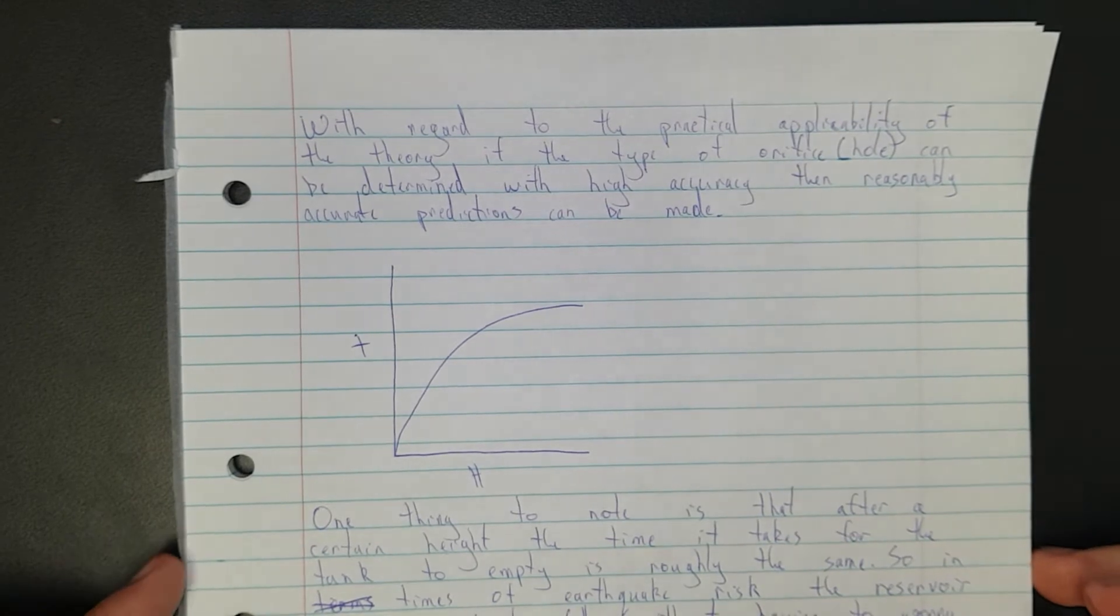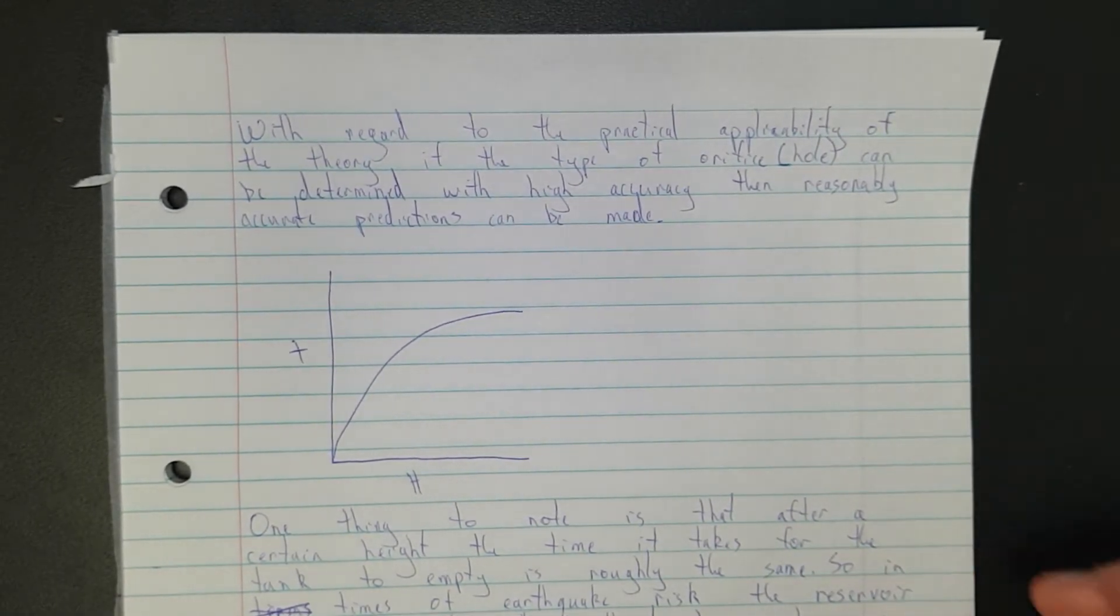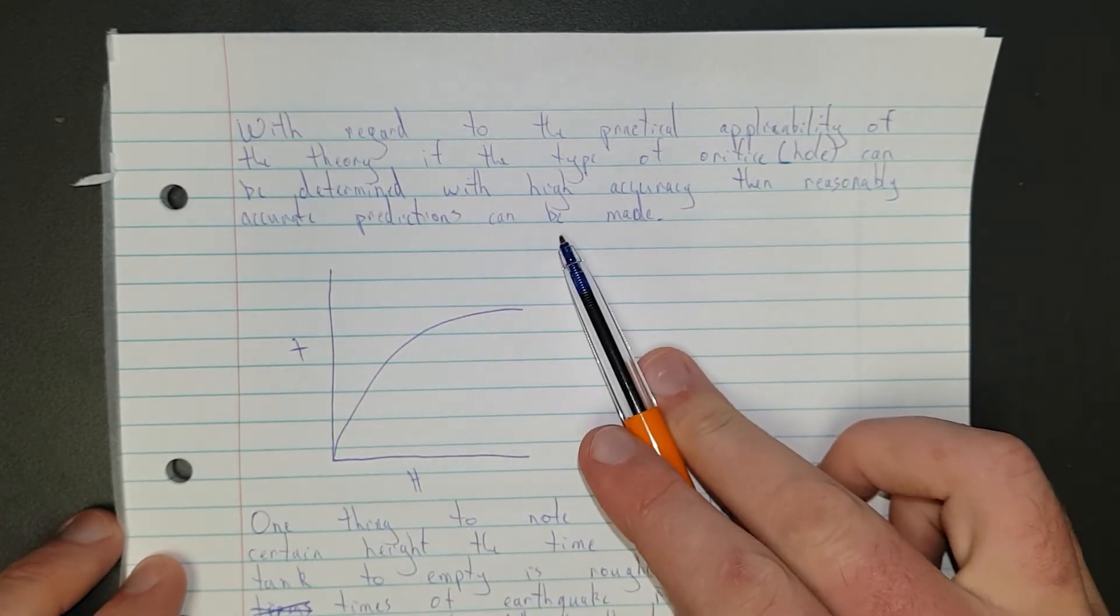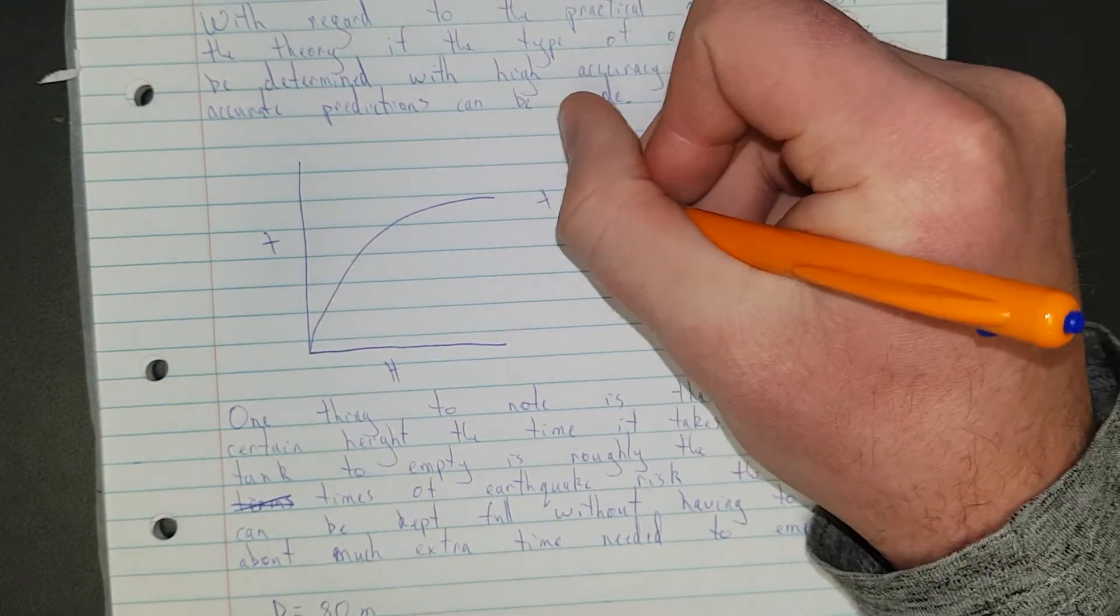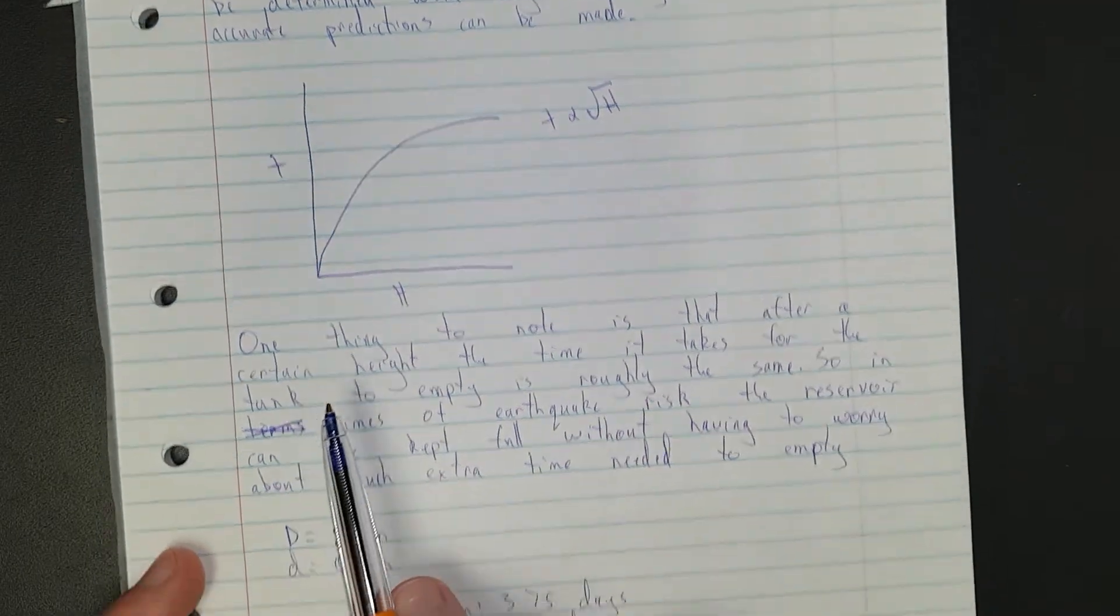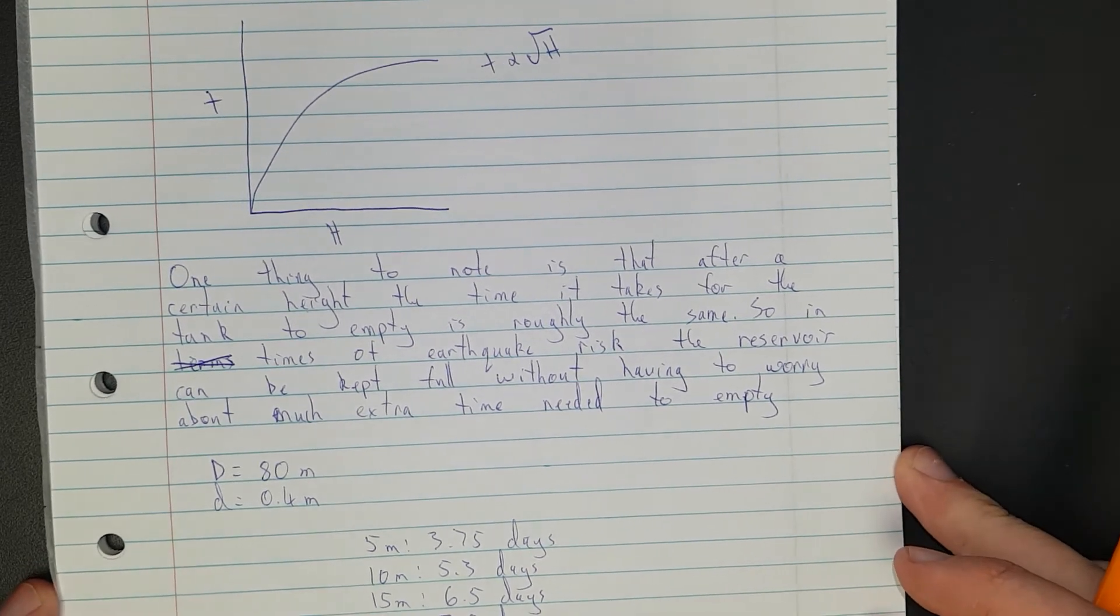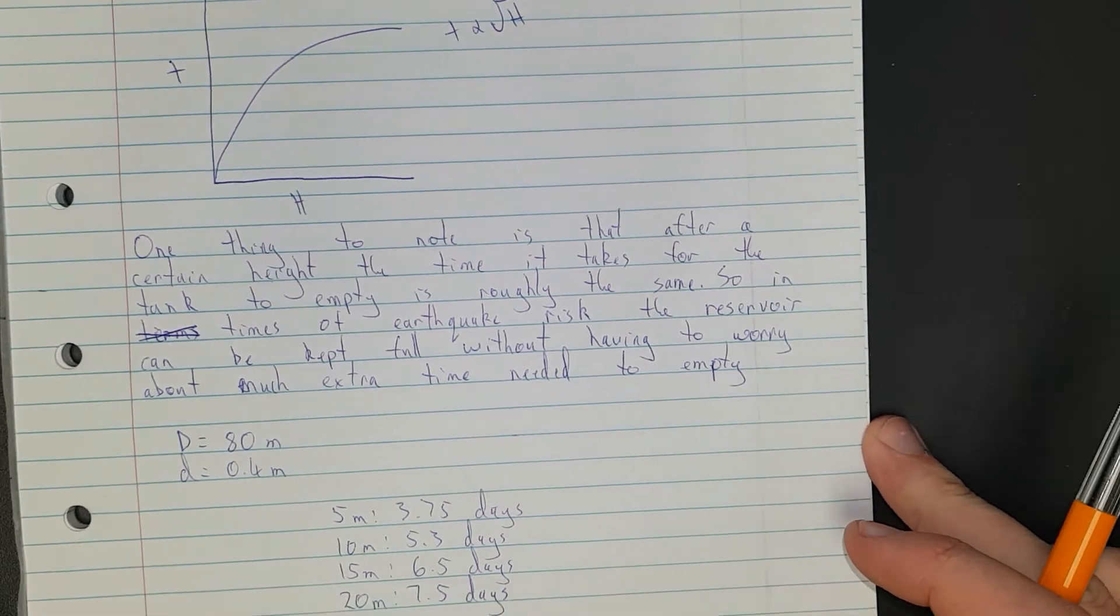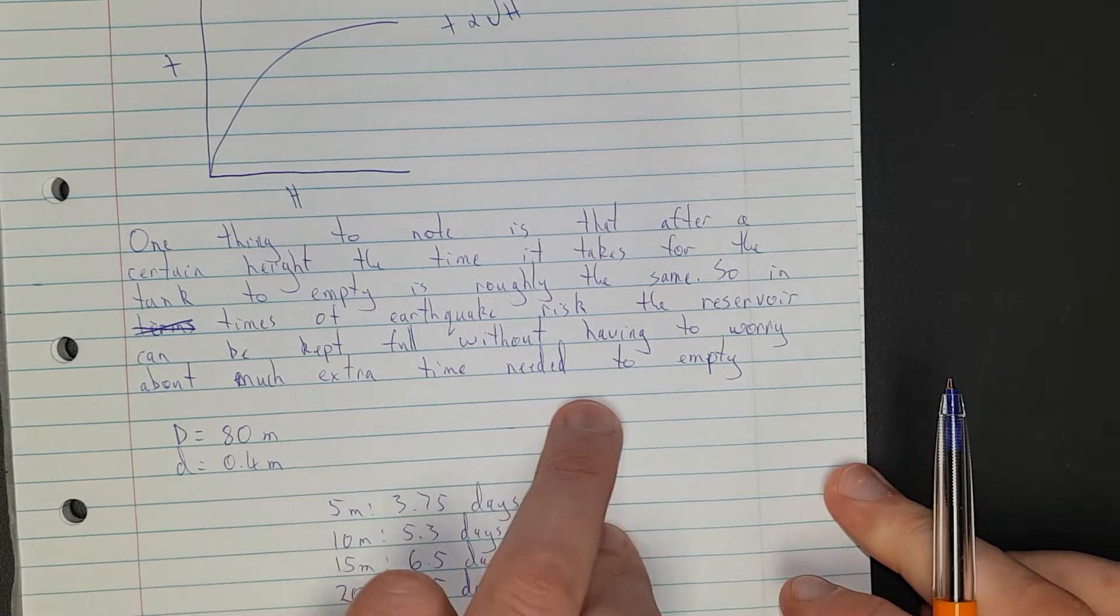So I've said, with regard to the practical applicability of the theory, if the type of orifice, so that's the hole, can be determined with high accuracy, then reasonably accurate predictions can be made. I've just sketched up, that's the rough relationship, where the time was proportional to the square root of the height. That was our non-linear graph. One thing to note is that after a certain height, the time it takes for the tank to empty is roughly the same. So in times of earthquake risk, the reservoir can be kept full without having to worry about much extra time needed to empty.